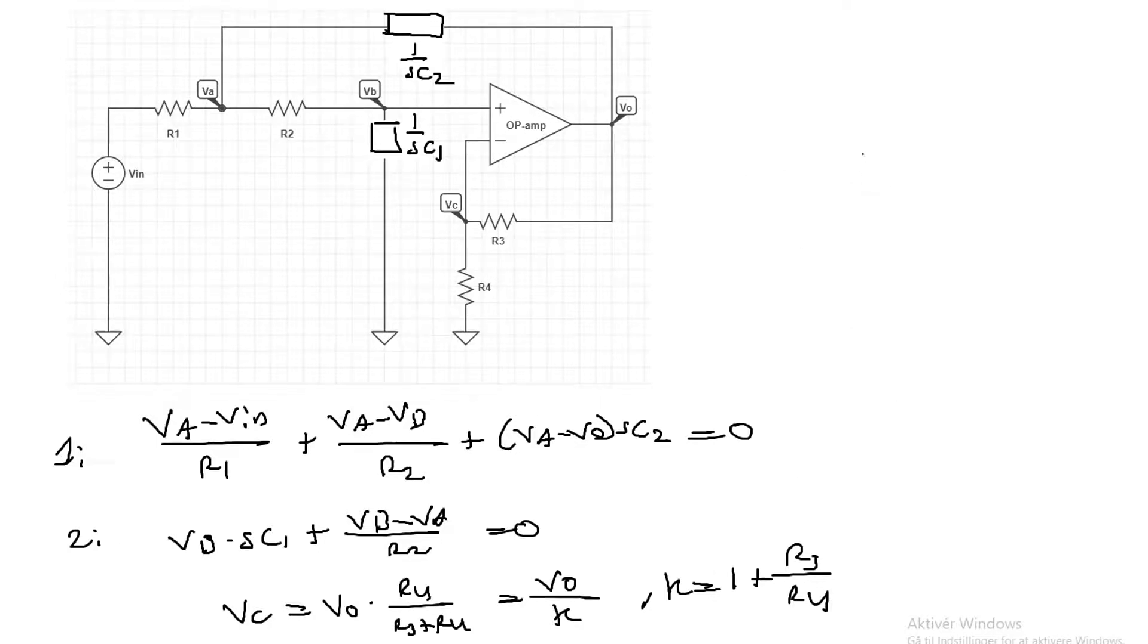And because this is an ideal operational amplifier we can utilize the concept known as a virtual short. This just means that the voltage at the non-inverting input is the same as the voltage at the inverting input. So vb equals vc which in turn equals vo over k.